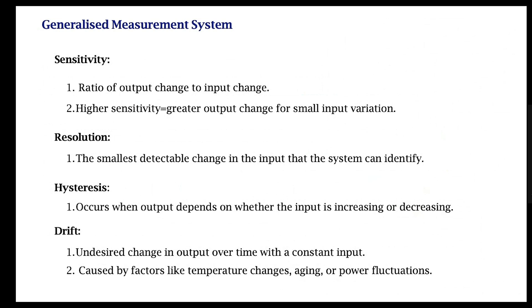Then there is the concept of drift. This is a situation in which a constant input causes an undesired change in the output — for example, giving a constant pressure and releasing it, but the sensor continues to measure non-zero pressure. Or placing a constant load and the output keeps increasing even though the input is constant. Drift happens due to temperature changes, aging of the system, or power fluctuations, and some sensors have this drift problem by definition.